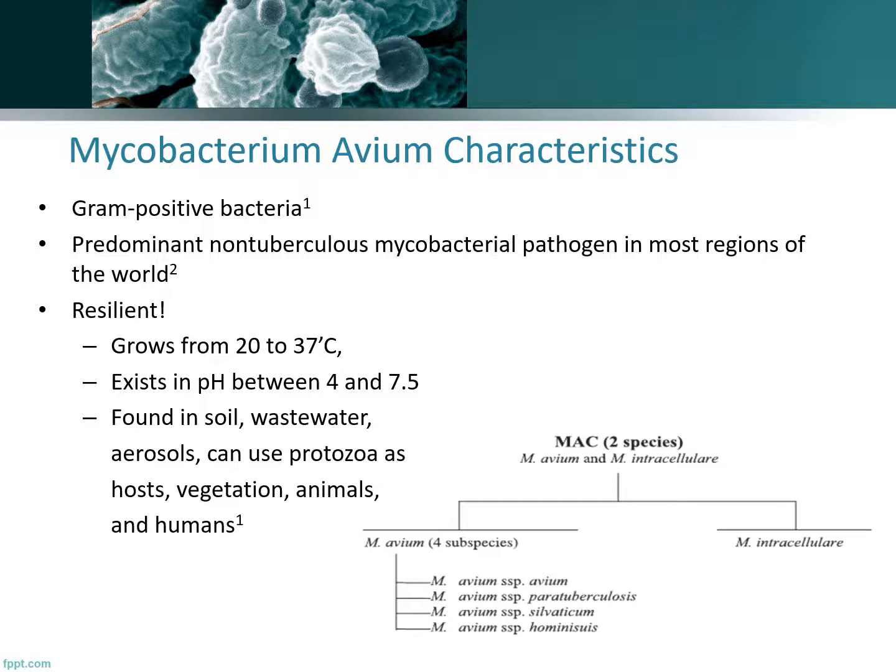One of the interesting and unique characteristics of mycobacterium is its incredible resiliency. It can grow between 20 to 37 degrees Celsius, it exists in a wide range of pHs between 4 to 7.5, and it's found in an enormous range of different settings — soil, wastewater, municipal water, aerosols, protozoa as a significant host, different vegetation forms, animals, and in humans.